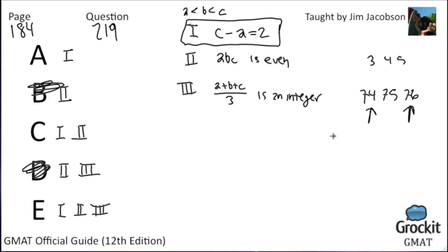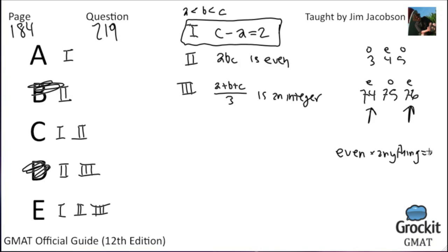Statement 2: Among any three consecutive integers, at least one must be even (e.g., 3,4,5 or 74,75,76). An even integer times any other integer is always even. So ABC must be even. This eliminates answer choice A. Both statements 1 and 2 must be true.